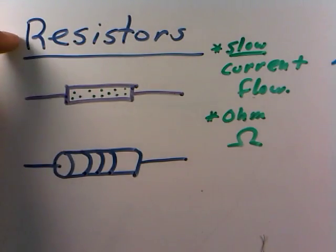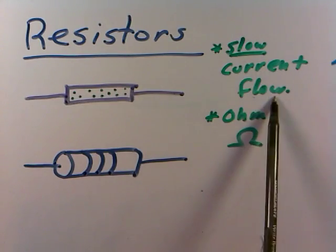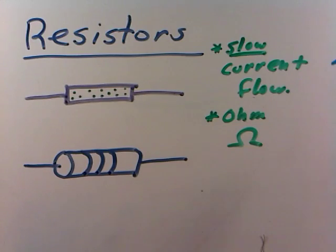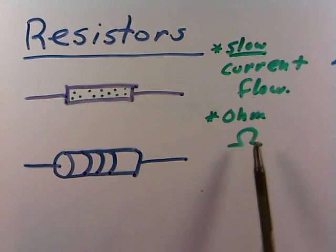In this video, we'd like to talk about what resistors do. Resistors, in a nutshell, slow the flow of current, and the amount of slowing they're able to do is a measure of the ohms, given this Greek letter omega right here, that the resistor has. Maybe 10 ohms, or 1,000 ohms, or 10,000 ohms, or maybe even 1,000,000 ohms.